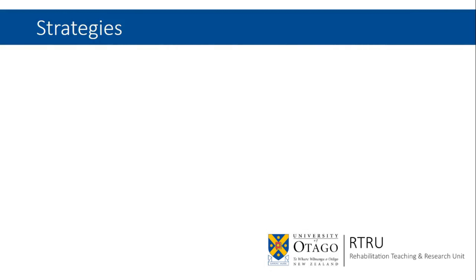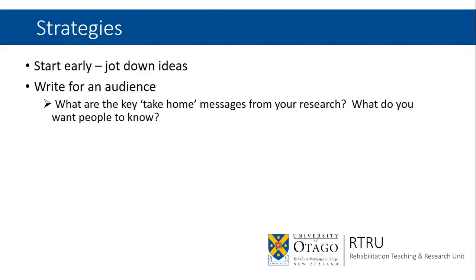So what are some of the strategies to use in order to identify things you should be talking about in your discussion section in more detail? One idea is to start early. While you are analysing your results, or even during the process of conducting your studies, start jotting down ideas about what might be important arising from your work. It's also a really good idea to have a clear picture in your head of who your audience is. Write for your audience. What are the key take-home messages? If you're writing to a specific journal, it is useful to know who the readership and editorship of that journal are.